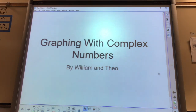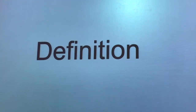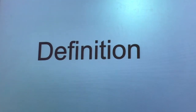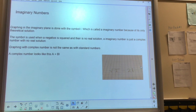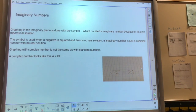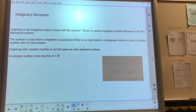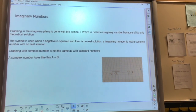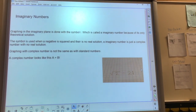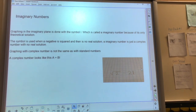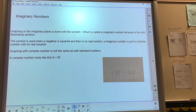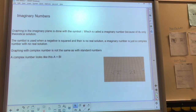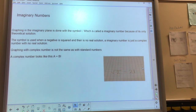Our topic is graphing with complex numbers. Imaginary numbers happen when a negative number is square-rooted. Since there is no solution to that, it becomes positive and gains the symbol i.